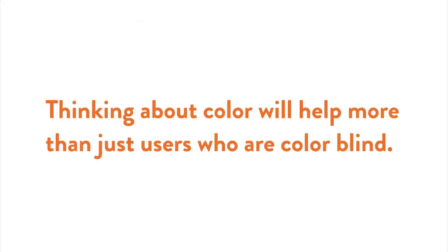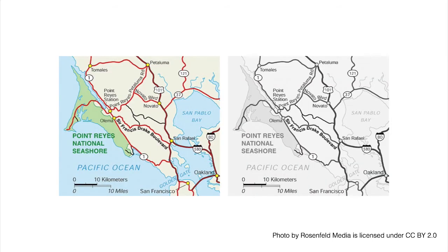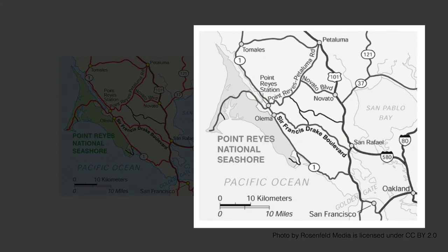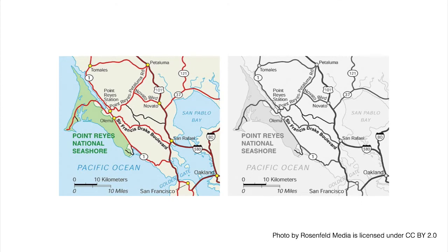Thinking about color will help more than just users who are colorblind. Here you see what a certain map looks like when it's printed. The grayscale also will give you an idea if colorblind users will be able to understand the information on the map. On the left, you can see several different colors to show land, water, and which roads are main or secondary. On the right, with the color removed, you can still tell things apart because the land and water are different shades of gray, and the main and secondary roads are different thicknesses. So you don't need to avoid color in places where it would be useful, but you do need to make sure that you are choosing colors and other design elements that don't exclude colorblind users.